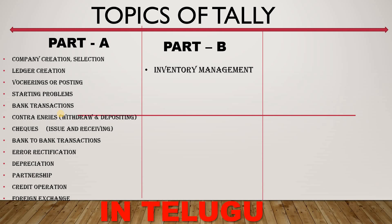Inventory management — I will explain it clearly. For example, I have 1000 computers total. In the first warehouse I have 500, and in the shop I have 500. Then from the shop I have 200 sold. So inventory management tracks all of this stock movement.